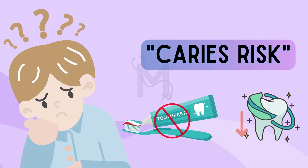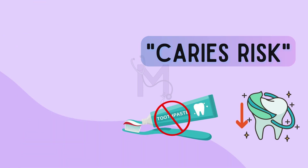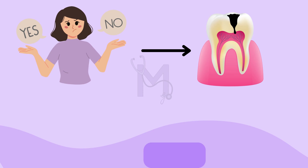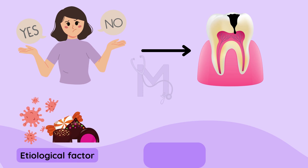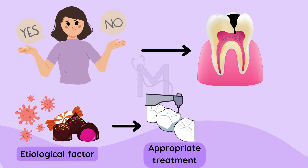The phrase caries risk has been used frequently, but what does it actually mean? It's basically the likelihood of a person developing a caries lesion or not. Naturally, if you can figure out what the main etiological factor in an individual with caries is, you can use the appropriate treatment for that particular person, which will automatically fetch you good results.